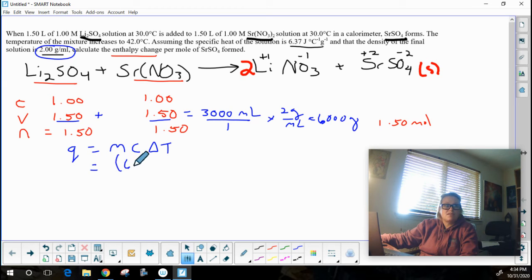So you're going to have 6,000 grams of this stuff in the calorimeter.